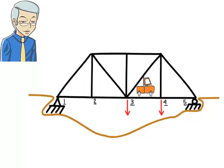When the applied load moves to joints 3 and 4, the vertical member attached to joint 2 becomes a zero-force member.